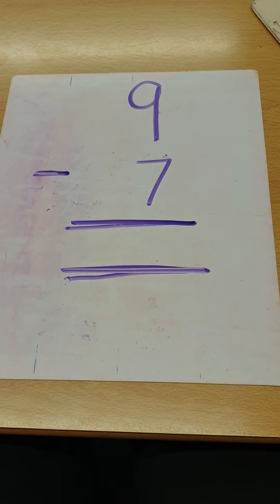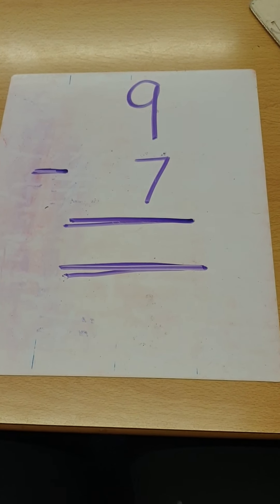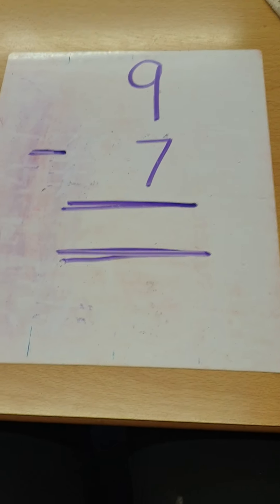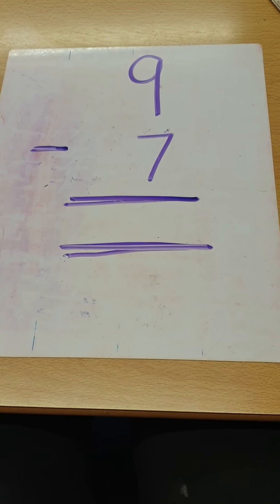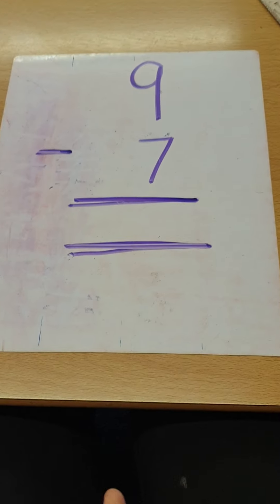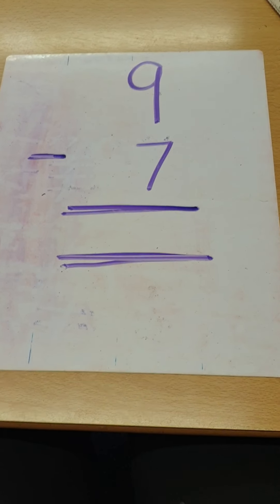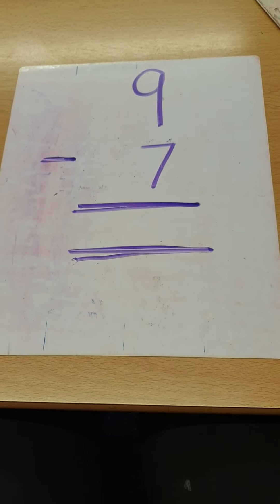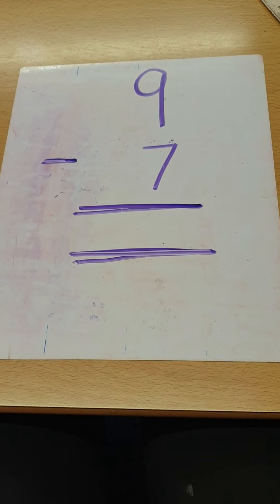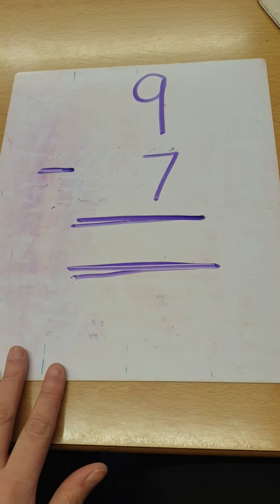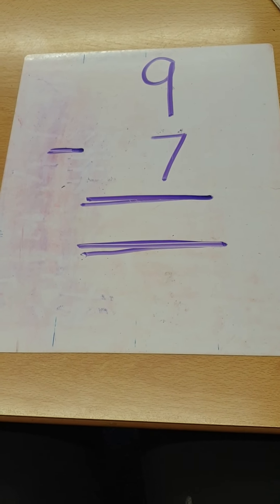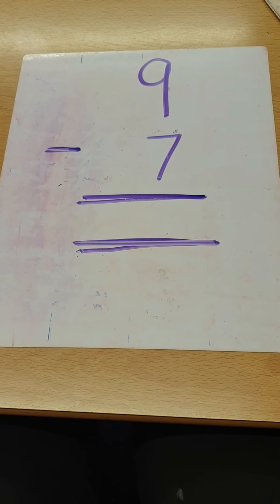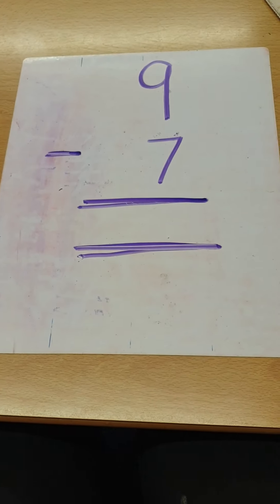Good morning Year Two and welcome to Monday morning's maths lesson. Last week you focused on column addition, which is based on adding numbers together, but this week we're going to focus on doing column subtraction, where we are taking numbers away from each other. So we're going to be looking at column subtraction, and here you can see I have got my first sum ready in column subtraction form.